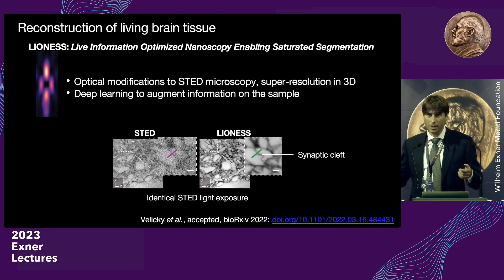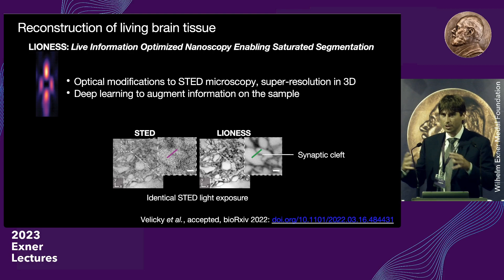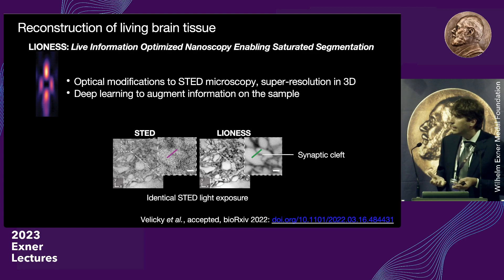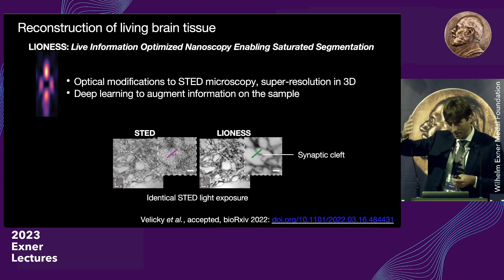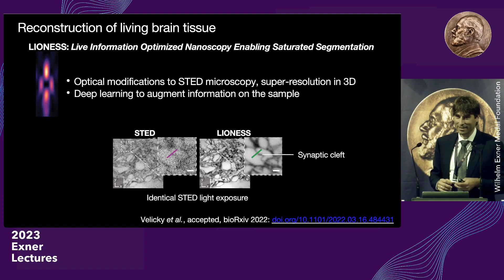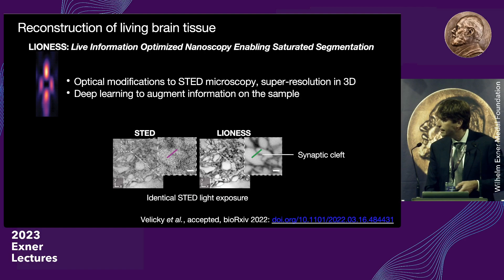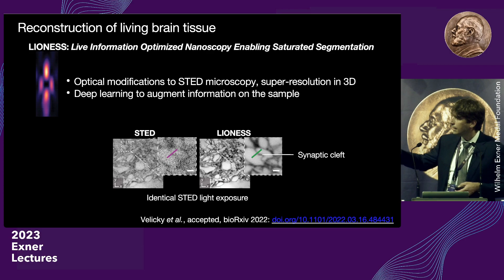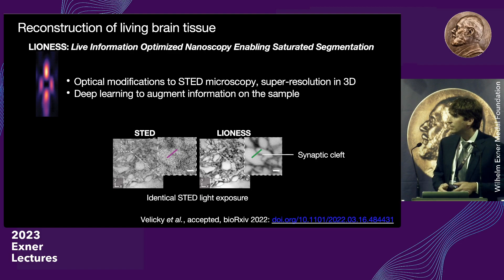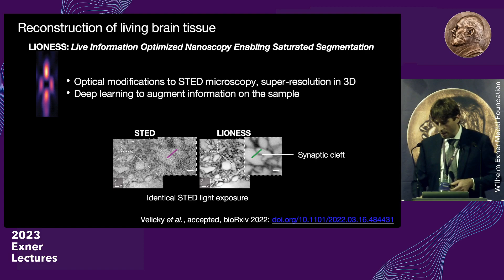This is why we needed to find ways to get around these intertwined limitations. We leveraged optical modifications to STED microscopy to reach isotropic resolution — the same resolution in all three spatial dimensions — with very high definition. Then we capitalized on deep learning, which is transforming various areas of life, to augment information on the sample. When we take these two elements together, the same specimen that classically looked blurry is now decoded at much higher definition with what we call LIONESS — Life Information Optimized Nanoscopy Enabling Saturated Segmentation.